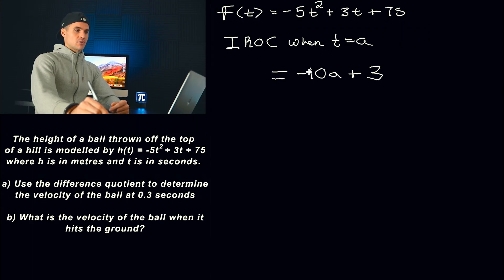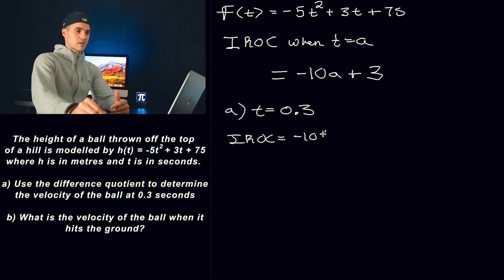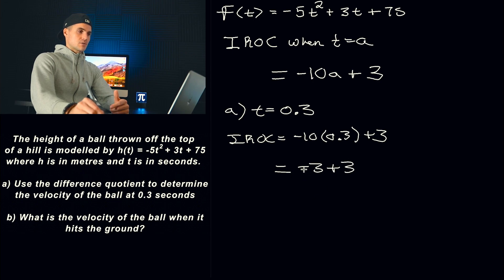Taking this general expression for velocity, in part A they're asking for the velocity at 0.3 seconds. So we plug in 0.3 for the A value: negative 10 times 0.3 plus 3. This is actually an interesting result — notice we get negative 3 plus 3, which gives us an instantaneous rate of change of zero.